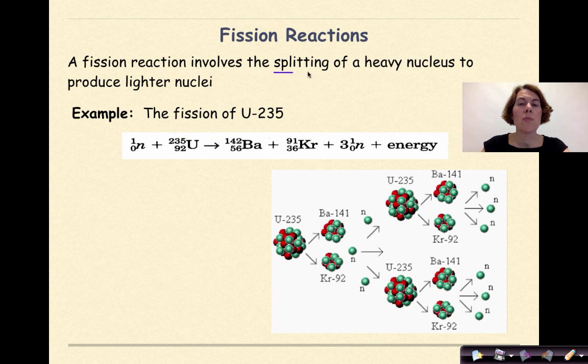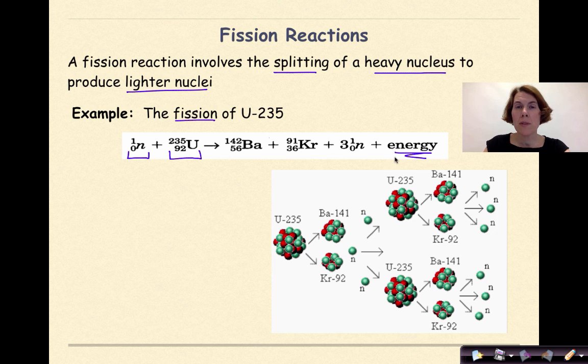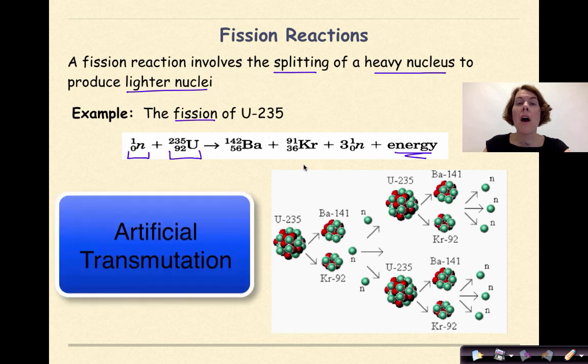So, for example, the fission of uranium-235: we have our target nucleus right here, we have a particle that is going to smash into this target nucleus, and then we're going to produce barium-142, krypton-91, three neutrons, and a bunch of energy. Now, if you're saying to yourself, wow, this looks really familiar, you're right, because this is just another way of saying artificial transmutation. So fission and artificial transmutation are basically the same thing.